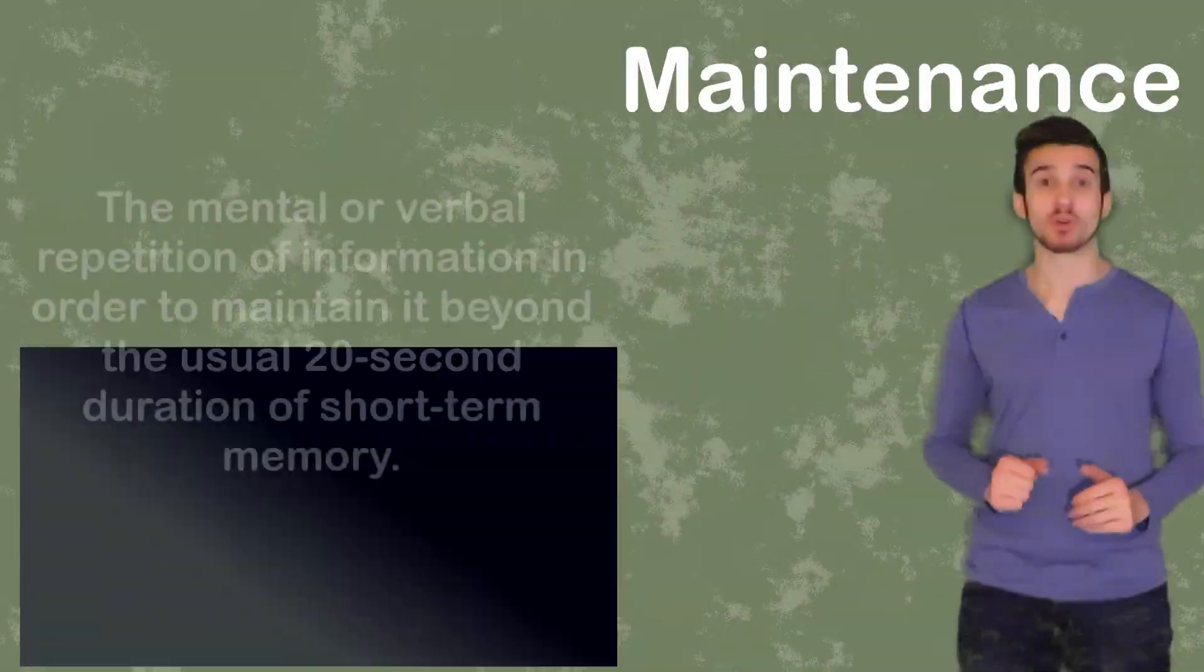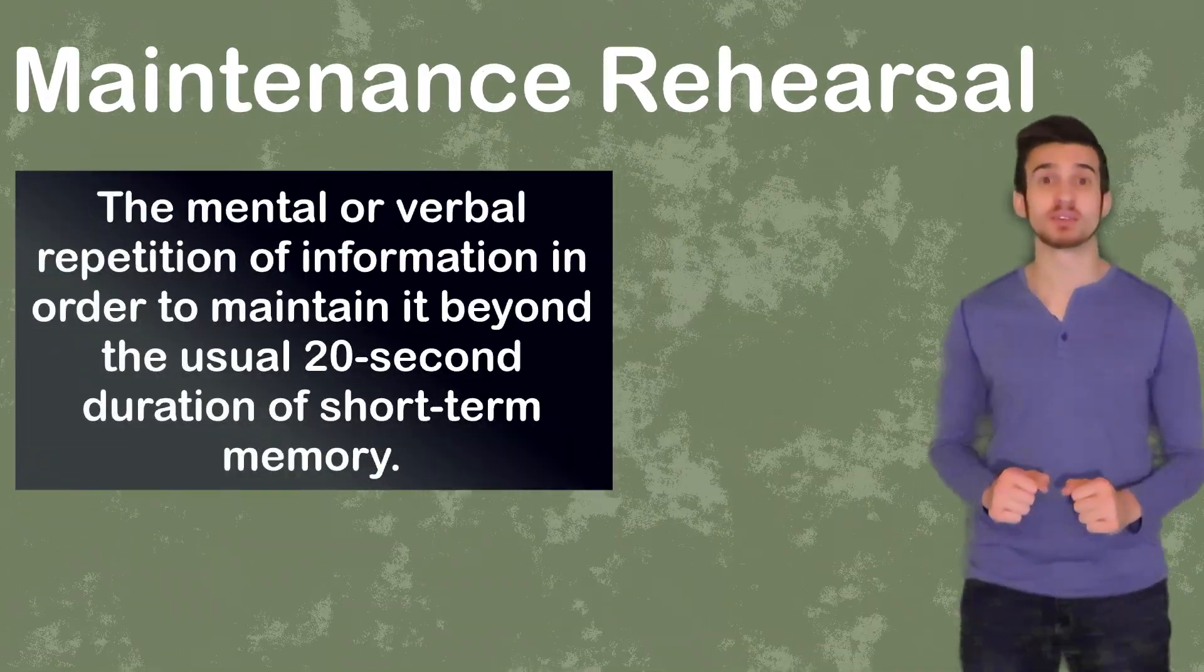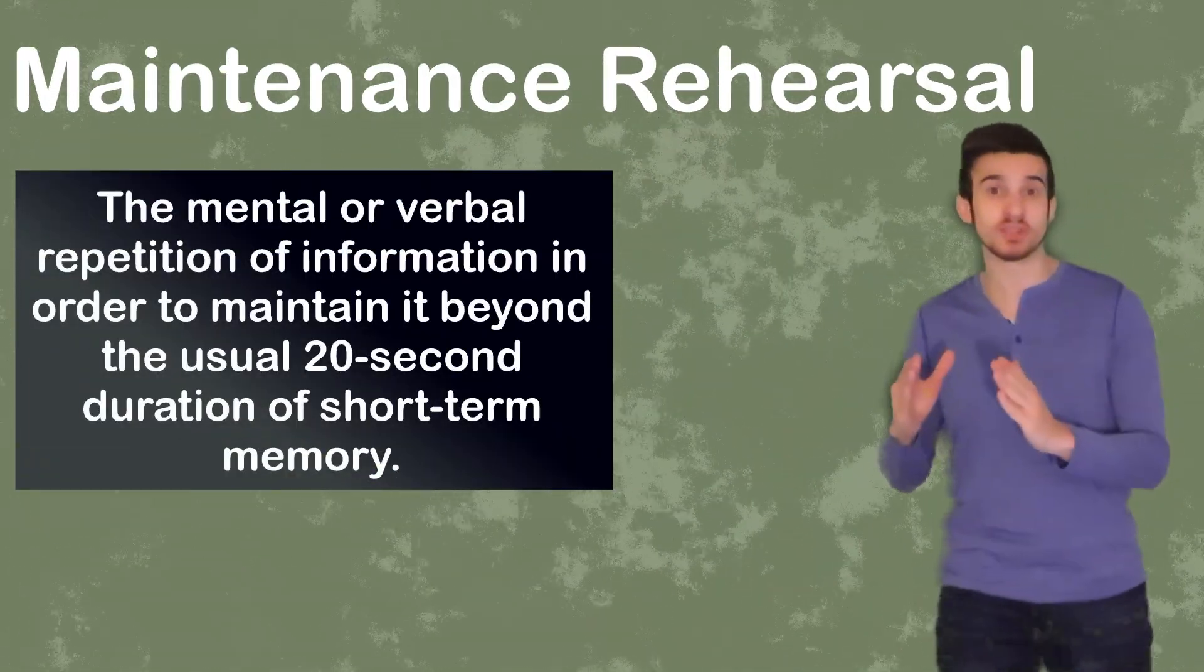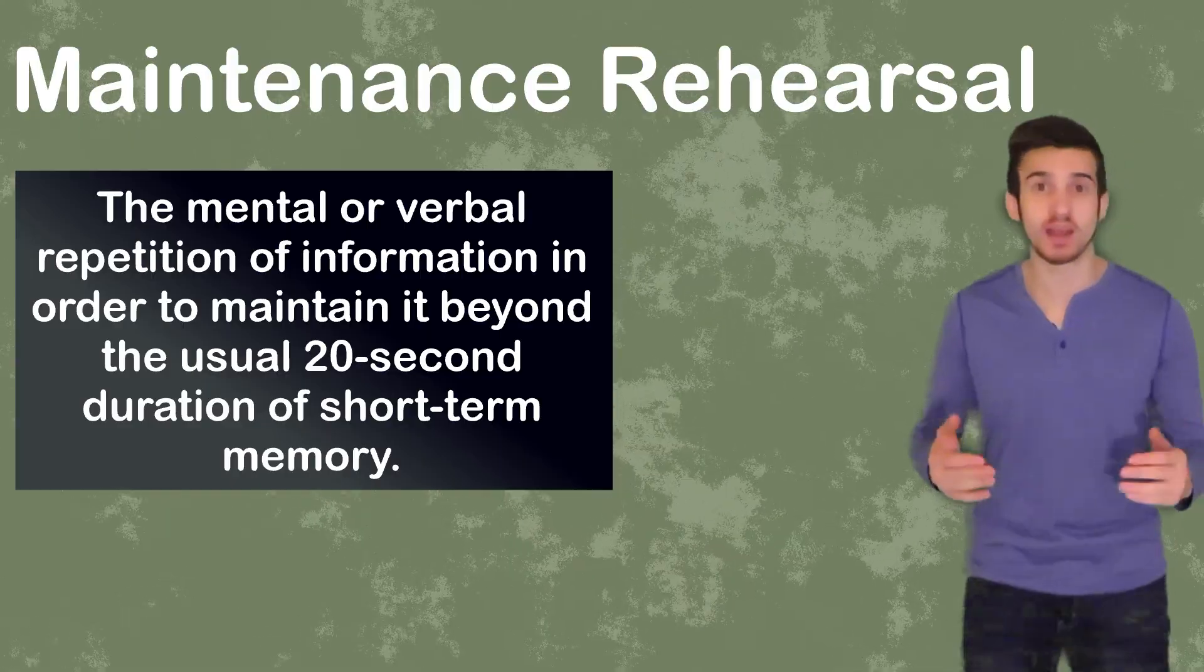Our short-term memory will last about 20 seconds unless that information is rehearsed. Maintenance rehearsal is going to be the simple process of repeating information to ourselves over and over again in order to allow ourselves to keep that information in our short-term memory for longer than that 20-second duration. Maintenance rehearsal is not going to be the most effective method of encoding information into our long-term memory. Once information is properly encoded from short-term memory, we arrive to our final destination of long-term memory.